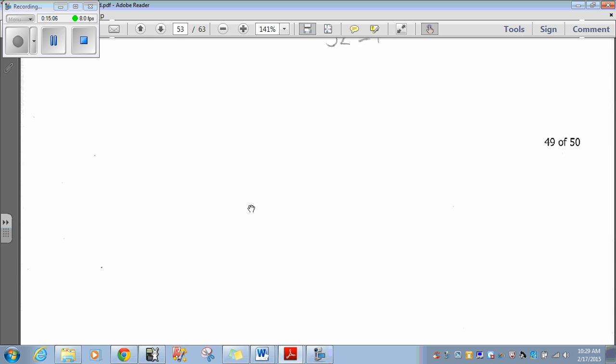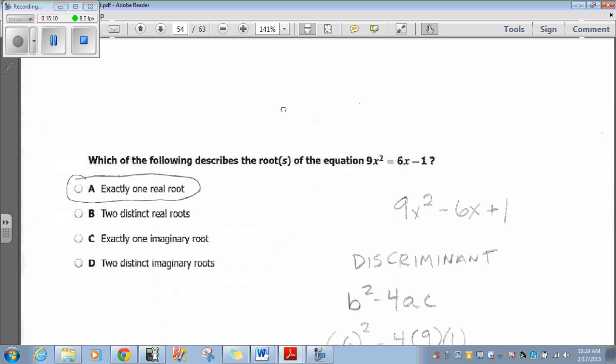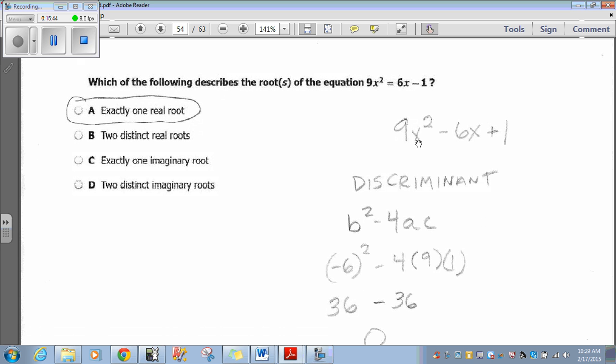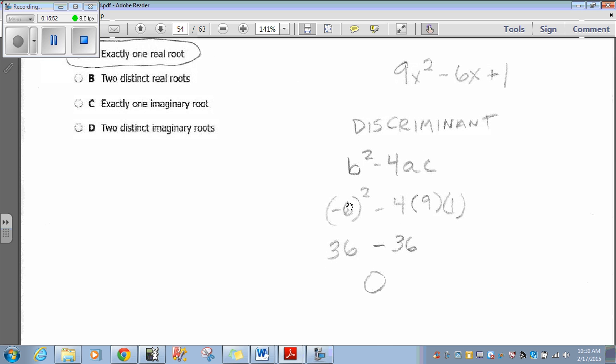And the last question. Question 50. Which of the following describes the root of the equation when 9x squared equals 6x minus 1? Well, set it equal to 0. So you're going to subtract 6x. You're going to add 1. You'll get 9x squared minus 6x plus 1. Then, you use the discriminant. And if you remember, the discriminant is just a part under the radical sign of the quadratic formula. B squared minus 4ac. So, negative 6 squared minus 4 times 9 times 1. So, negative 6 squared is 36. Negative 4 times 9 is negative 36 times 1 is 36. 36 minus 36 is 0.